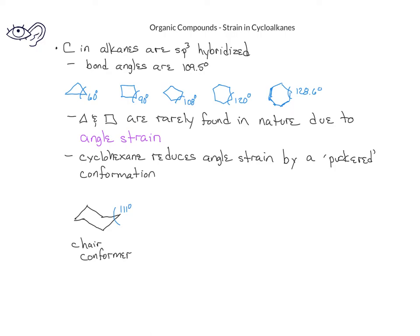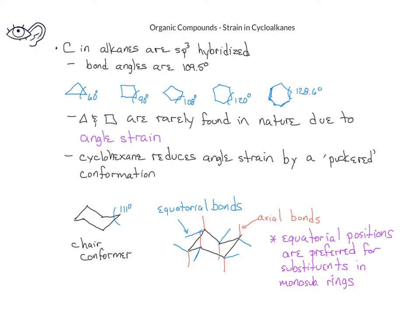Another important aspect of the chair conformer is the bonds that come off of the carbon atoms in the cyclohexane ring. The bonds form two types of positions. Three bonds stick straight up and three bonds stick straight down from the ring. These are called axial bonds because they are essentially along an axis. There are also three slightly angled bonds that point down and three slightly angled bonds that point slightly up. These are called equatorial bonds. Monosubstituted cyclohexanes prefer to have their substituents in equatorial positions because there is less crowding or steric strain with the other atoms in equatorial positions.